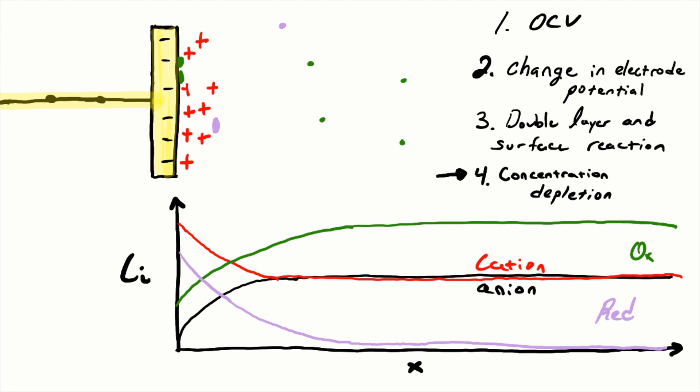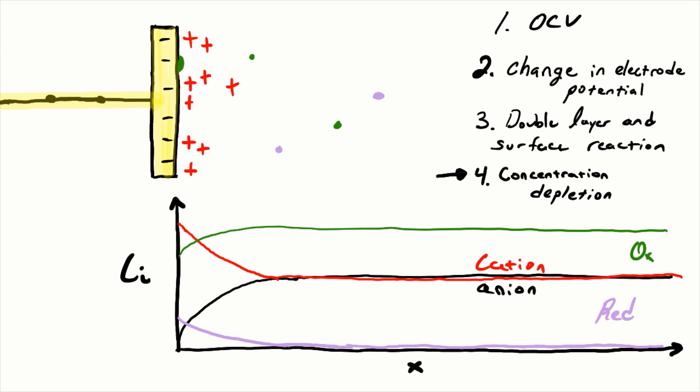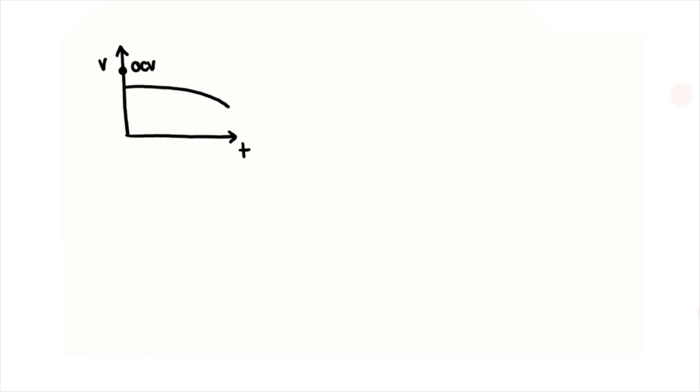Overall, electron transfer starts to affect phenomena on different timescales from small to large. Note that the order of these processes depends strongly on the system, so take this as an example.